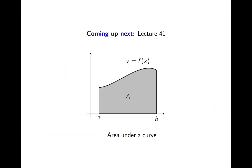That's it for today. We've investigated initial value problems and had a peek at differential equations. Coming up next in lecture 41, we're going to look at what seems like an entirely different topic: area under a curve. Given a function f of x and two numbers a and b on the x-axis, how many square units of area are contained in the shaded region? This looks like it has nothing to do with antiderivatives, but we'll see that it's intimately connected with antiderivatives. I'll see you next time. Goodbye.